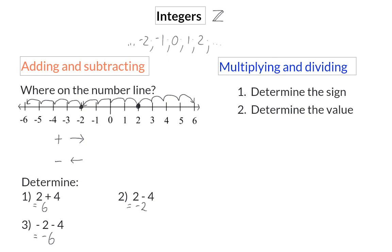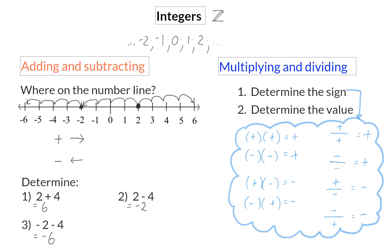To determine the sign, I am reminding you that when multiplying or dividing with the same sign, you end up having a positive value, and when you multiply and divide two different signs, the answer is negative. And when you need to determine the value, you simply need to multiply or divide what was given.